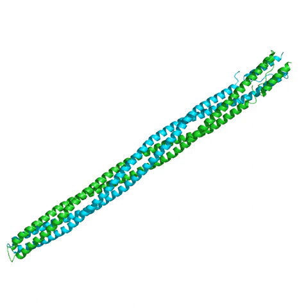MCPs either bind ligands directly or interact with ligand-binding proteins, transducing the signal to downstream signaling proteins in the cytoplasm.